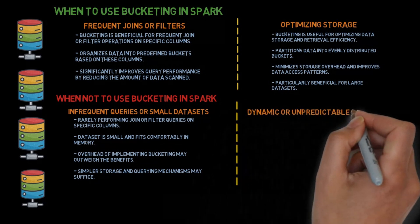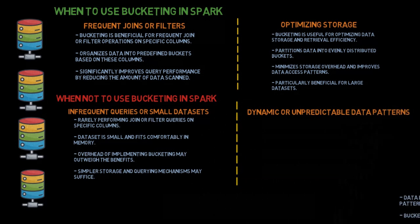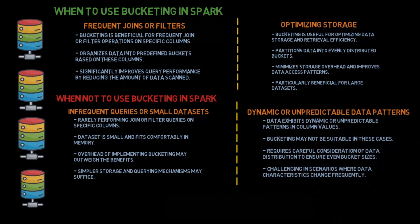Dynamic or unpredictable data patterns: if data exhibits dynamic or unpredictable patterns in column values, bucketing may not be suitable. It requires careful consideration of data distribution to ensure even bucket sizes, which is challenging in scenarios where data characteristics change frequently. Overall, bucketing in Spark is a powerful optimization technique for improving query performance and data processing efficiency, particularly in scenarios involving large datasets and frequent data retrievals or joins.